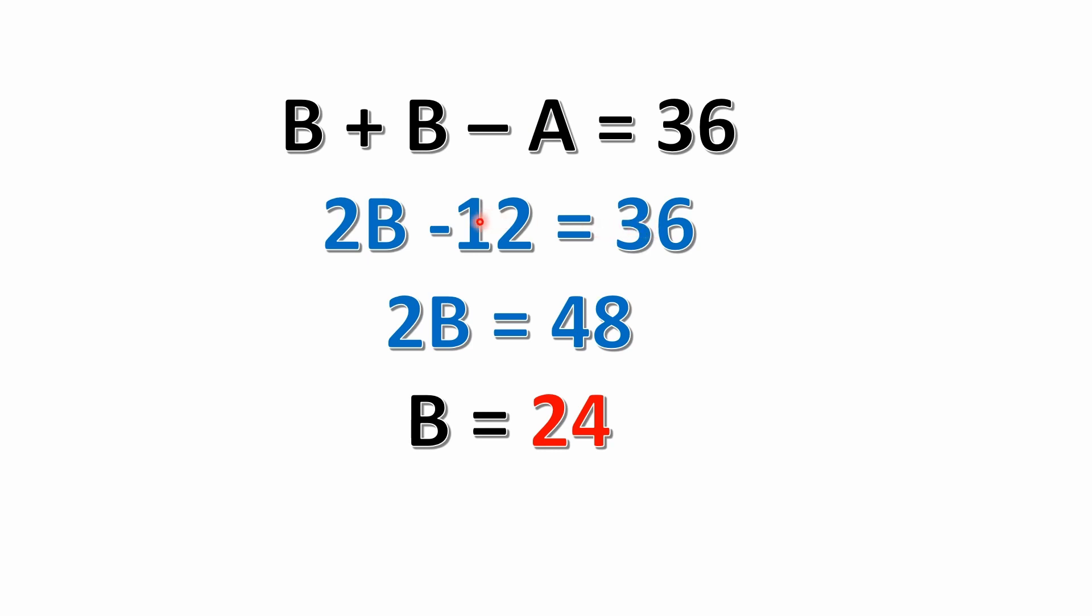Well, from here, if we want to simplify this further, we would add 12 to both sides of the equation. So we add 12 on the left, minus 12 plus 12, this goes away. We're going to be left with just 2B. If we add 12 to this 36, we're left with 48. 2B equals 48. From here, you divide both sides of the equation by 2, leaving B equals 24. So we have A equals 12, B equals 24.